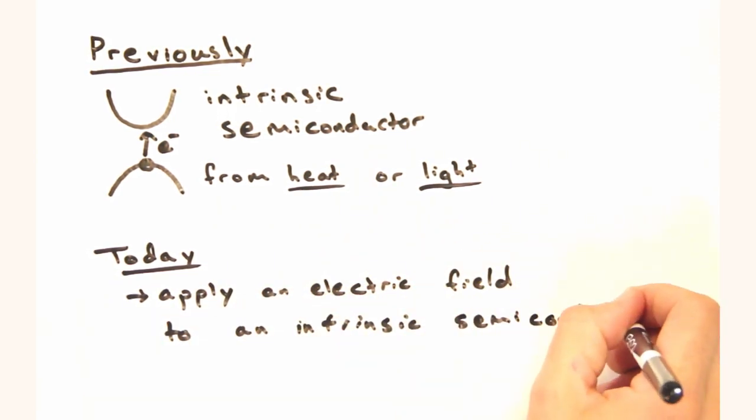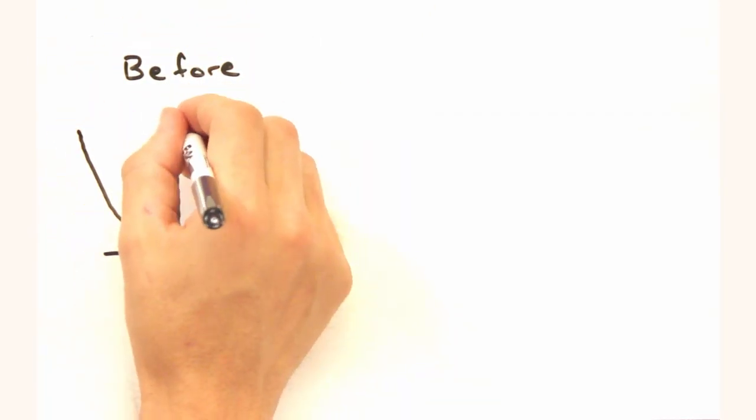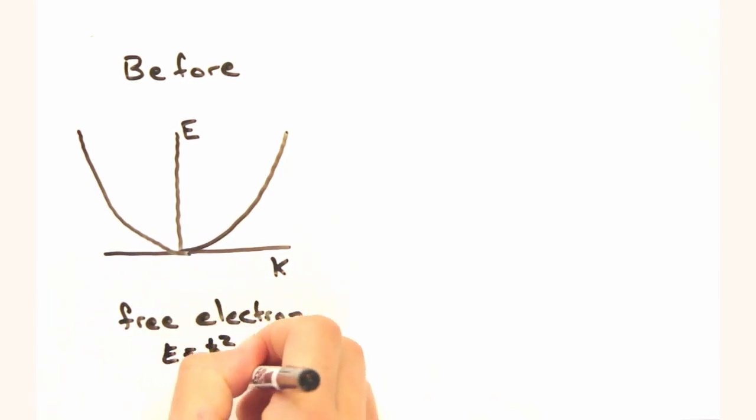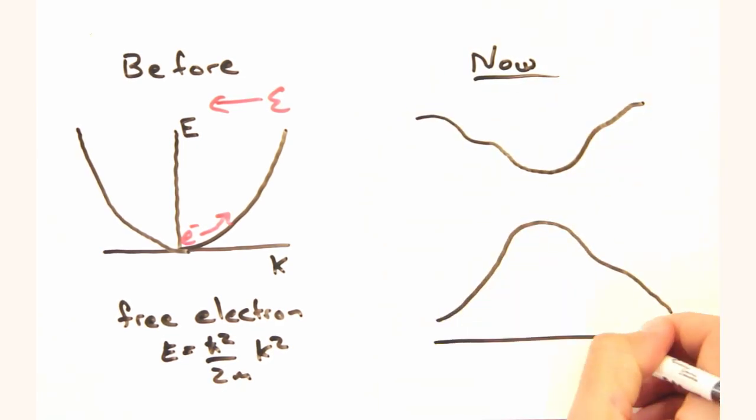Wait, didn't we do this a long time ago for a free electron? In that video, we showed that an electron in an E field will feel a force on it that shifts it by dk and thus accelerates it in the field. Good point. And we'll find a lot of that carries over here.